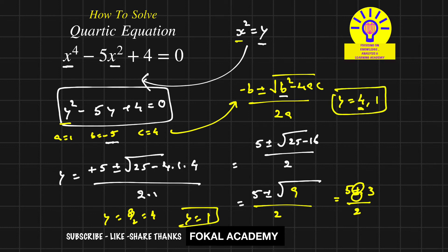Since x^2 = y, when y = 4, x = ±2. Similarly, when y = 1, x = ±1. Therefore x = 2, -2, 1, and -1. These are the four roots.